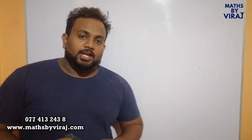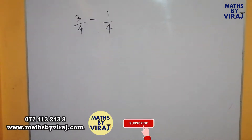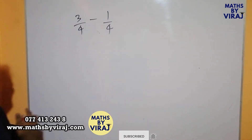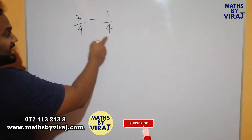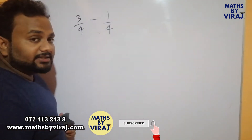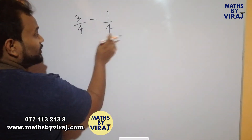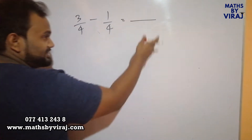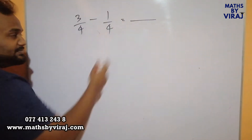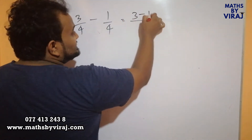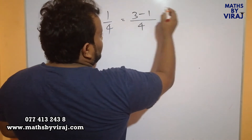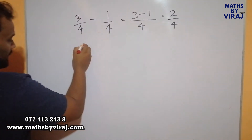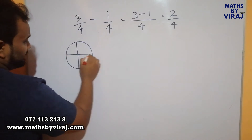Children, if you look at this example: 3 over 4 minus 1 over 4. You can still see that the denominators are the same. When the denominators are the same, if it is subtraction, you can easily subtract the numerators, which is 3 minus 1 equals 2 over 4.